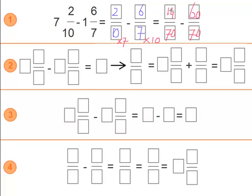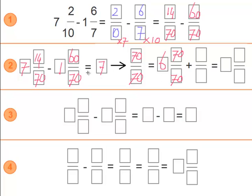As you can see, 14 is smaller than 60, so this would equal a negative number, which we do not want. So we need to fix this problem. We have 7 and 14 over 70 minus 1 and 60 over 70. We take the 7 and borrow 70 over 70, which equals 1. So 7 minus 1 is 6. Now we add the other fraction: 70 over 70 plus 14 over 70. Keeping the denominator the same, 70 plus 14 equals 84, giving us 6 and 84 over 70.